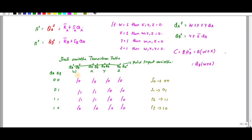Next let us find QA plus. Since W is 1, (W plus X) bar becomes 0, but the first term W bar contributes — so QA plus will be 1 because 1 plus anything is 1. Likewise if Y is 1, QB will definitely be 1. If X is 1, QA is 1.